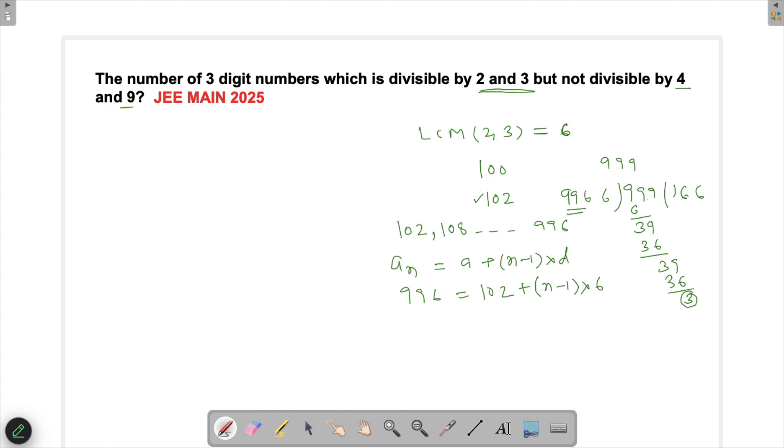Now if I subtract, 996 minus 102, then what I get is 6 minus 2 will be 4, 9 minus 0 is 9, and 9 minus 1 is 8. So 894 upon 6, and then I will get n minus 1. So once I divide this I get 149, so n is going to be 150.